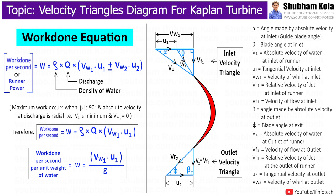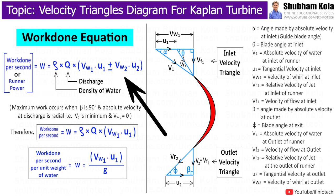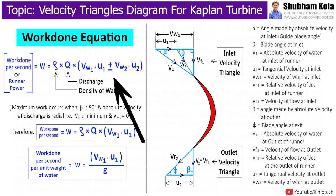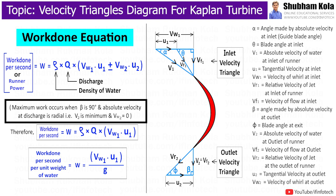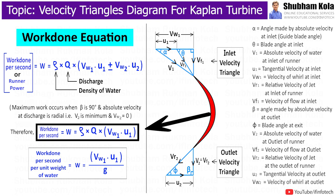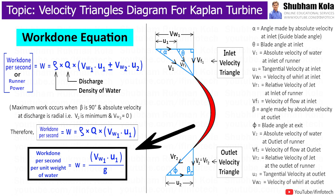Next we will move to the work done equation for Kaplan turbine. Work done per second is given by a formula where Q is discharge through the nozzle in m³/s, equal to area multiplied by velocity. A positive sign is taken when β is less than 90 degrees, and a negative sign when β is more than 90 degrees. Maximum work occurs when β equals 90 degrees, where V2 is minimum and Vw2 is zero. The equation for work done per second per unit weight of water is then reduced accordingly.